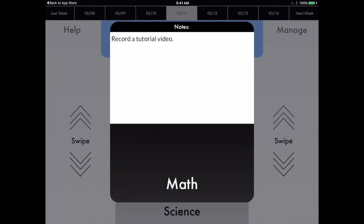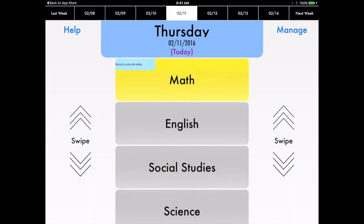I just click anywhere outside of that note box and it goes away. You can see that it's yellow, indicating I have homework. And you can see my little note. When I get home, I say, okay, I've got to record my tutorial video. I know what I have to do.